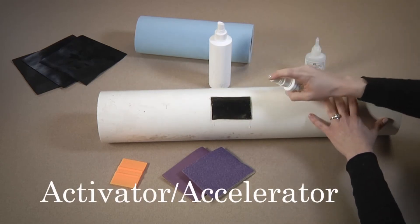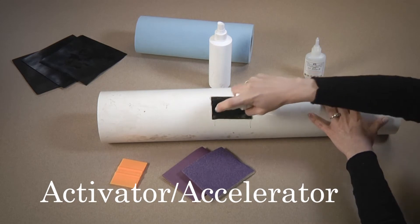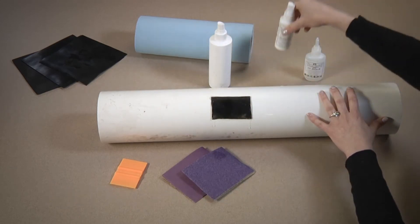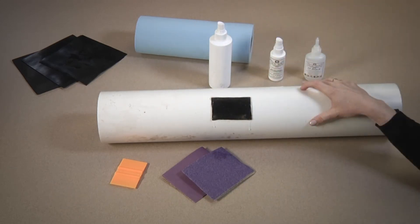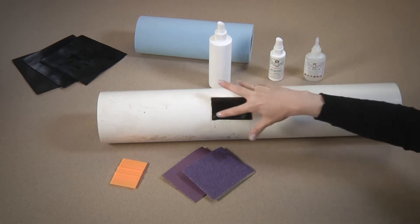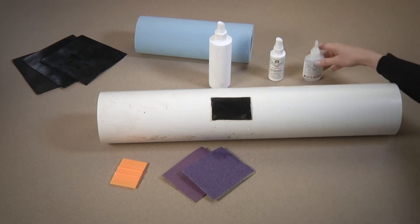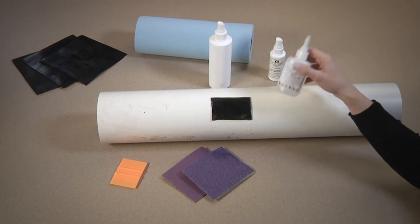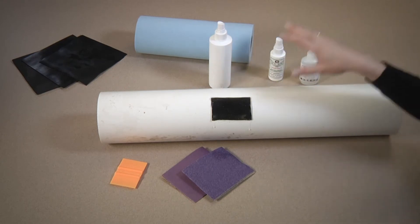And finish it by spraying with the activator accelerator. Check your perimeter to make sure there are no problem areas. If there are problem areas, apply another thin layer of the SI Black as needed and spray with activator accelerator. Repeat as necessary.